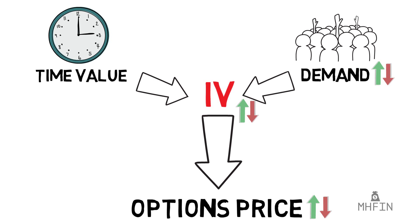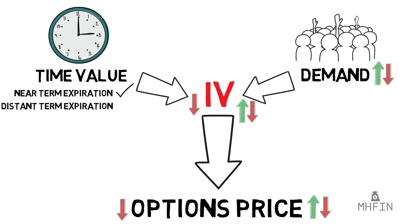The time value of options — or the amount of time left until the option expires — is another major influence. An option that's expiring relatively quickly will have a low IV, while one expiring well into the future will have a high IV, because there's more time baked into the option's price, leaving it exposed longer to time and giving it a higher chance to experience changes and react to market events.